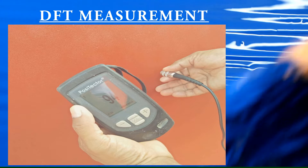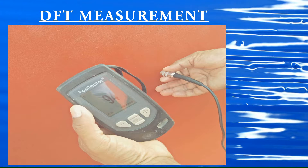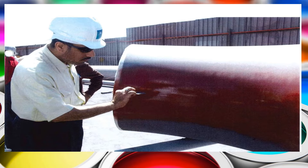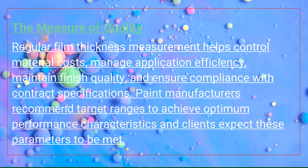To find WFT: WFT = (100 × DFT) ÷ volume solid. That means 100 × 90 ÷ 60, therefore giving us 150 microns as the WFT.